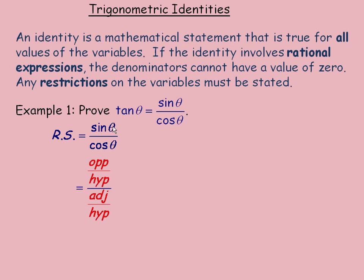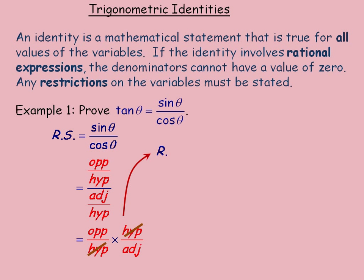Remember that sin of an angle is the opposite side divided by the hypotenuse, and cos is the adjacent side divided by the hypotenuse. We're dividing two rational expressions — sin on the top and cos on the bottom. The way we divide rational expressions is to take the numerator, opposite over hypotenuse, and multiply by the reciprocal of the denominator. The reciprocal of adjacent over hypotenuse is hypotenuse over adjacent. The hypotenuse terms divide out, simplifying to just opposite over adjacent. Opposite over adjacent is the same as tan θ.